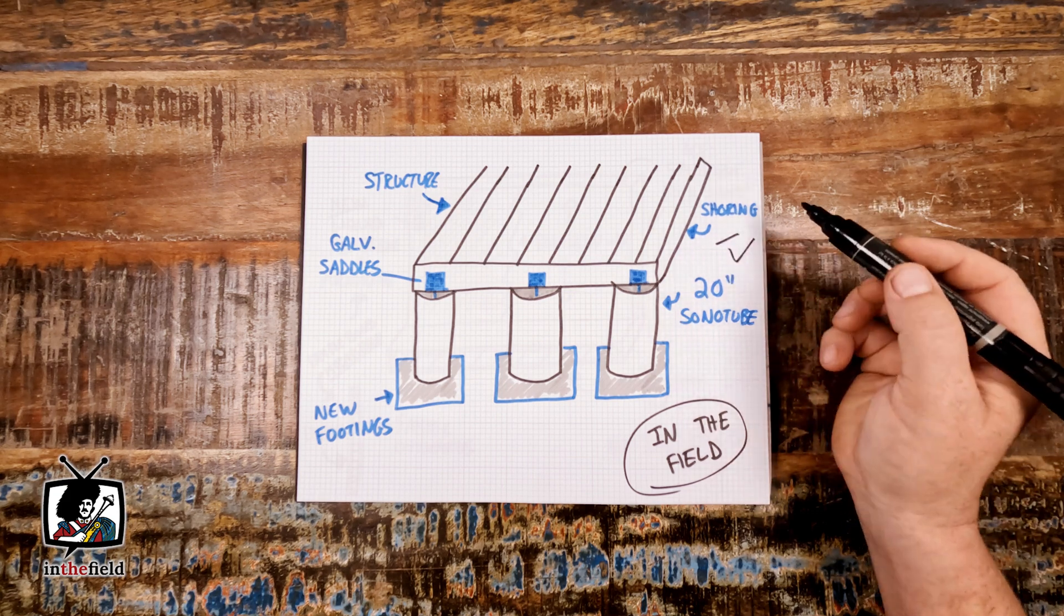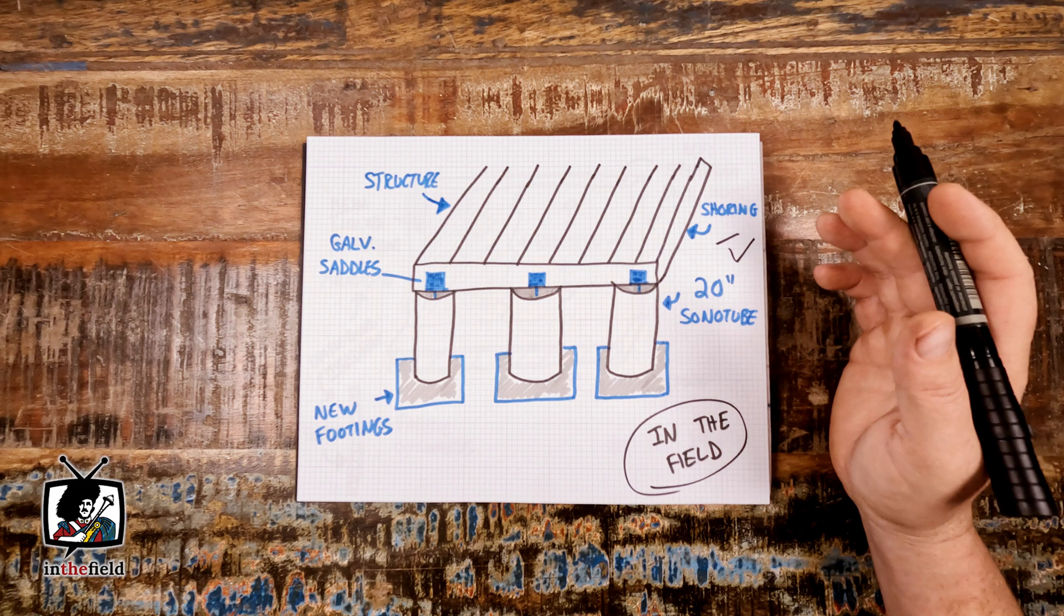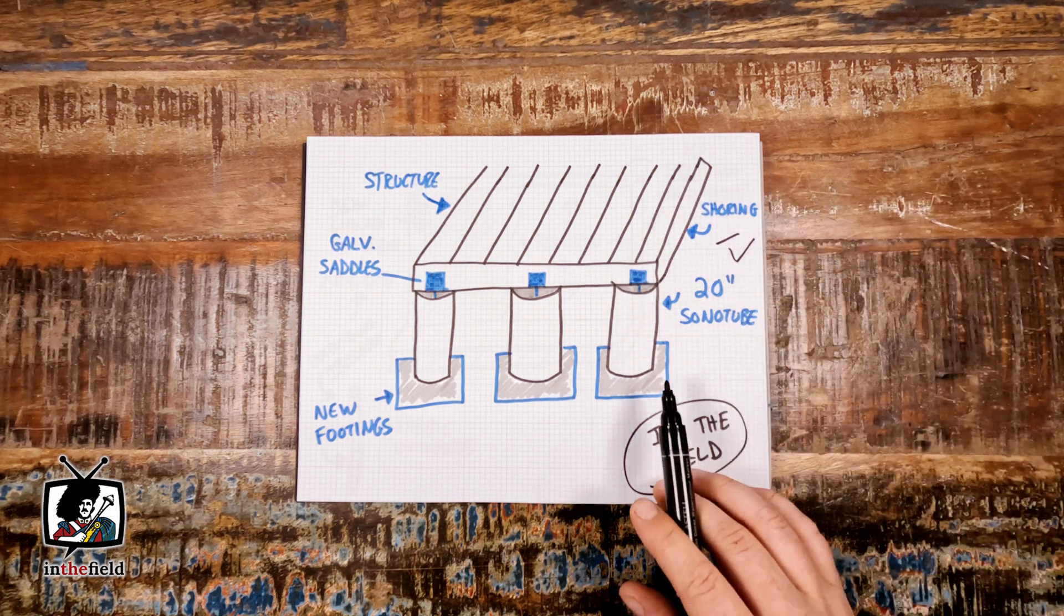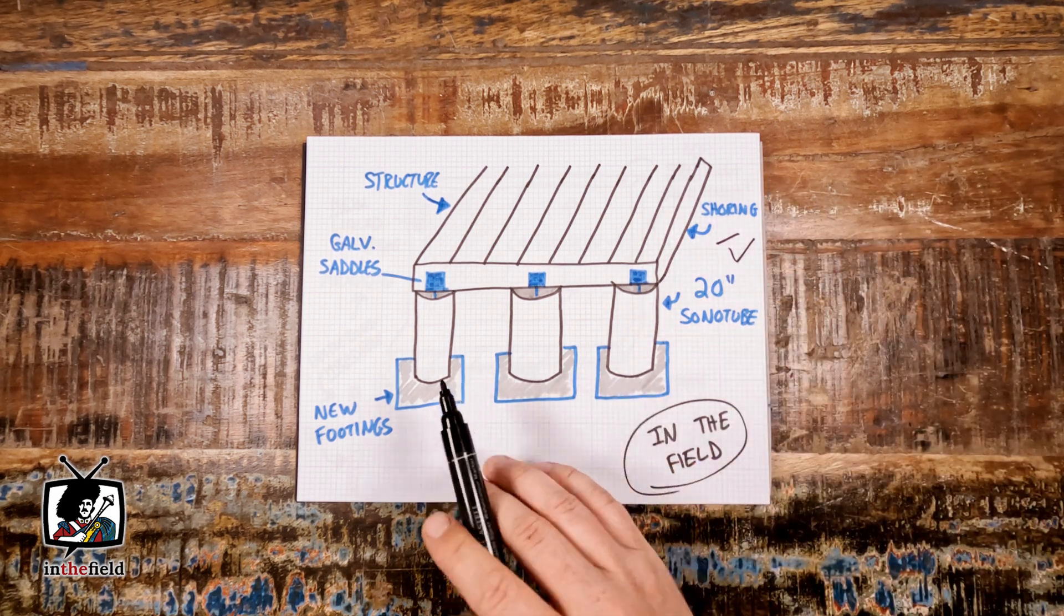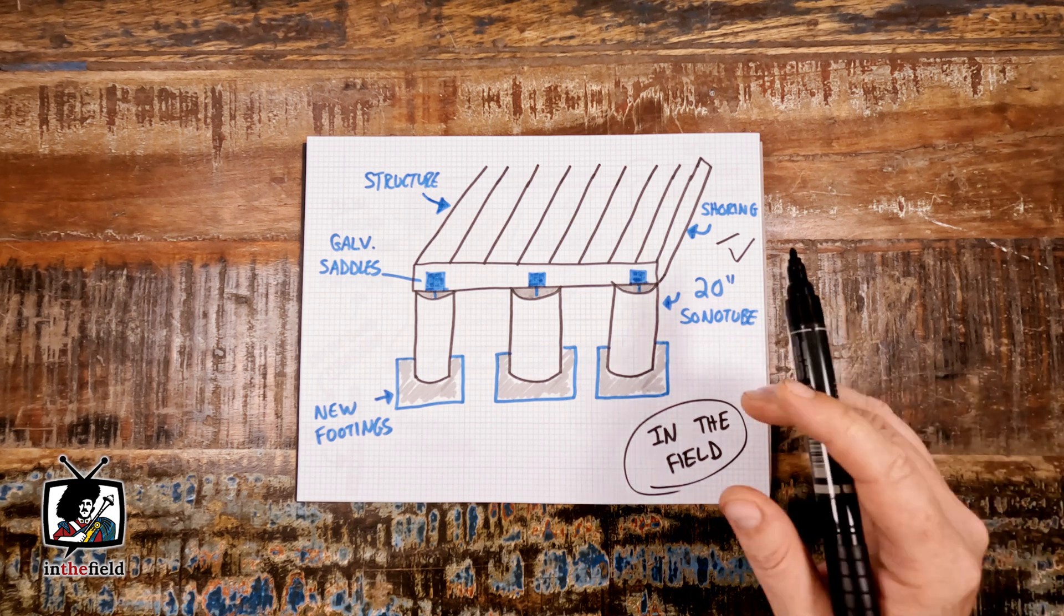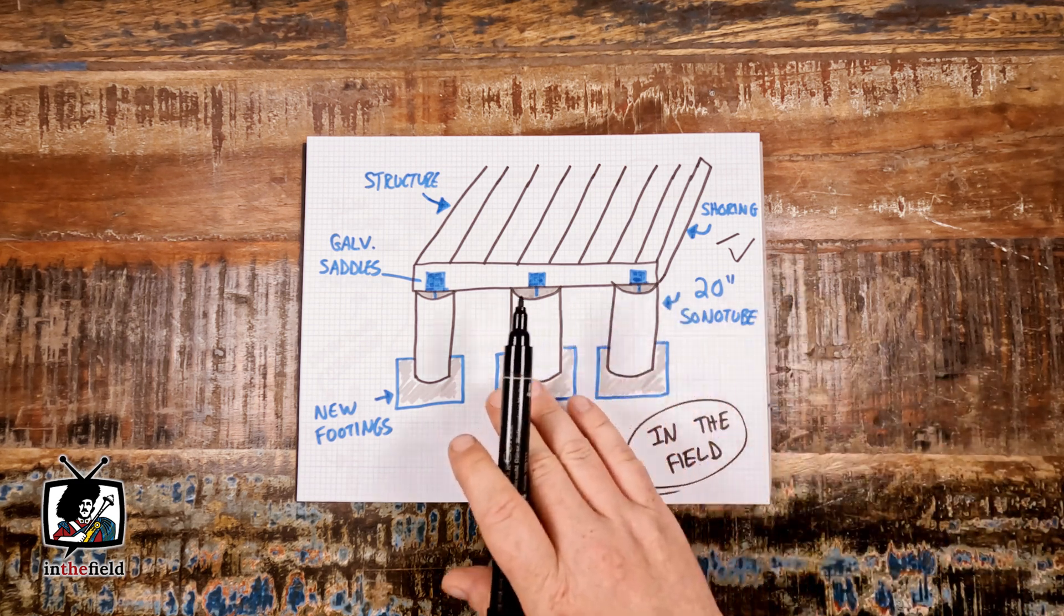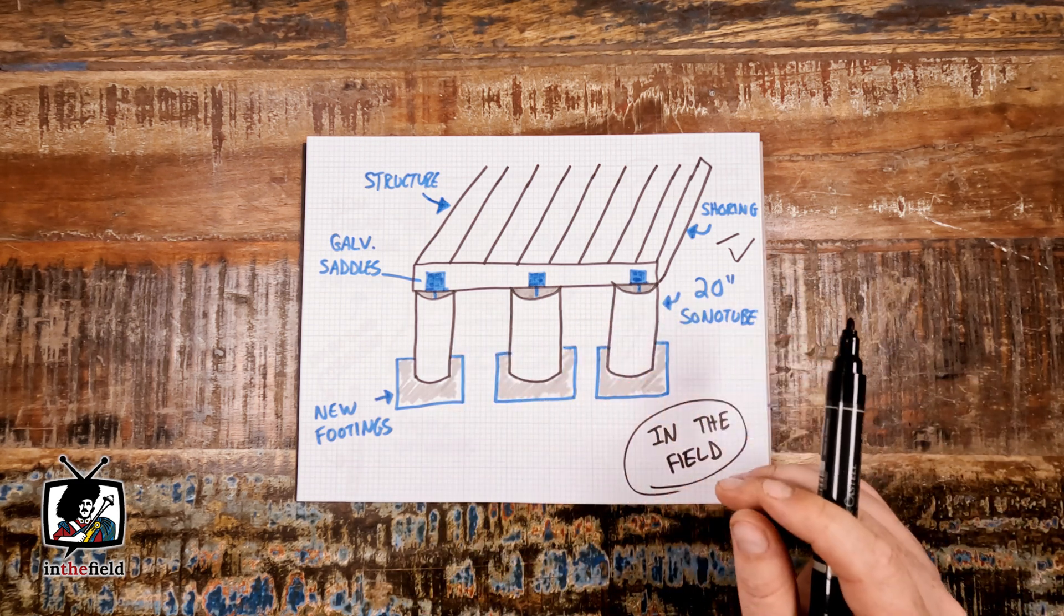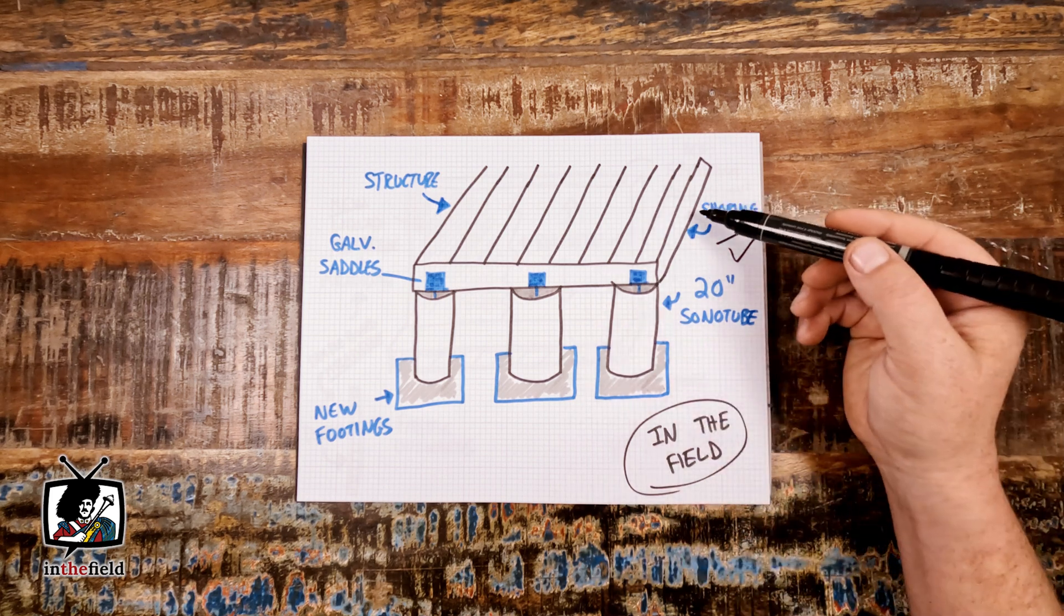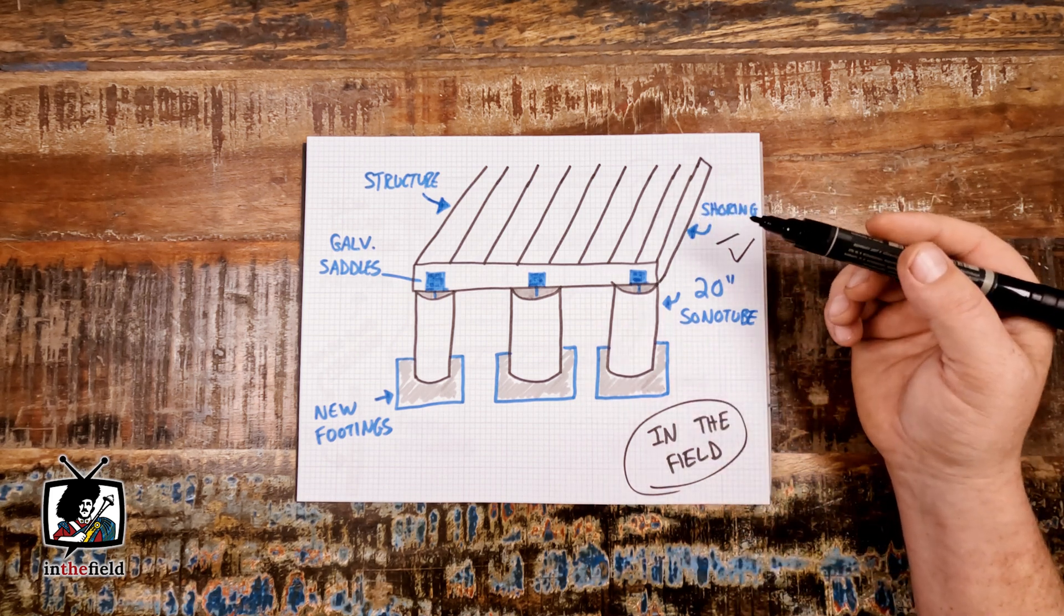Once we had the structure shored up properly we began excavations in the area of the existing sonotubes by hand. After exposing these undersized existing sonotubes we checked our shoring to be safe one by one.